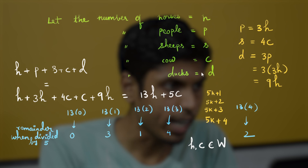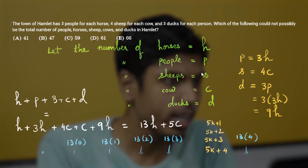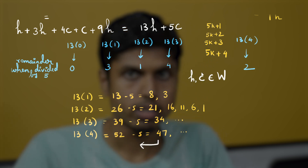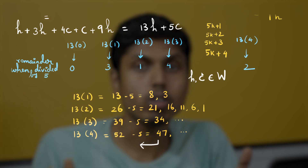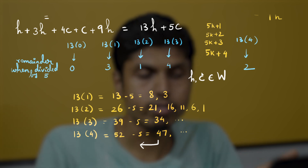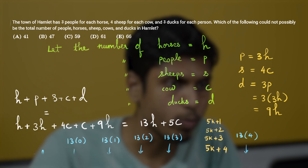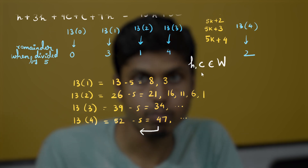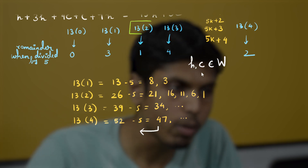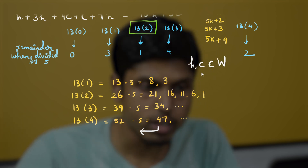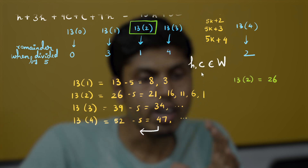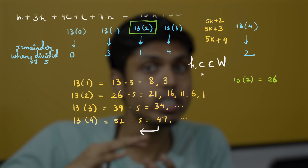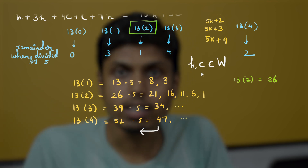Now let's return to the answer choices: 41, 47, 59, 61, and 66. Notice that any number greater than 47 can be represented — 47 is the largest number that cannot be represented as a linear combination of 13 and 5. This eliminates options c, d, and e. Now consider 41: it leaves a remainder of 1 when divided by 5, and 13×2 = 26 is the first number leaving that remainder.